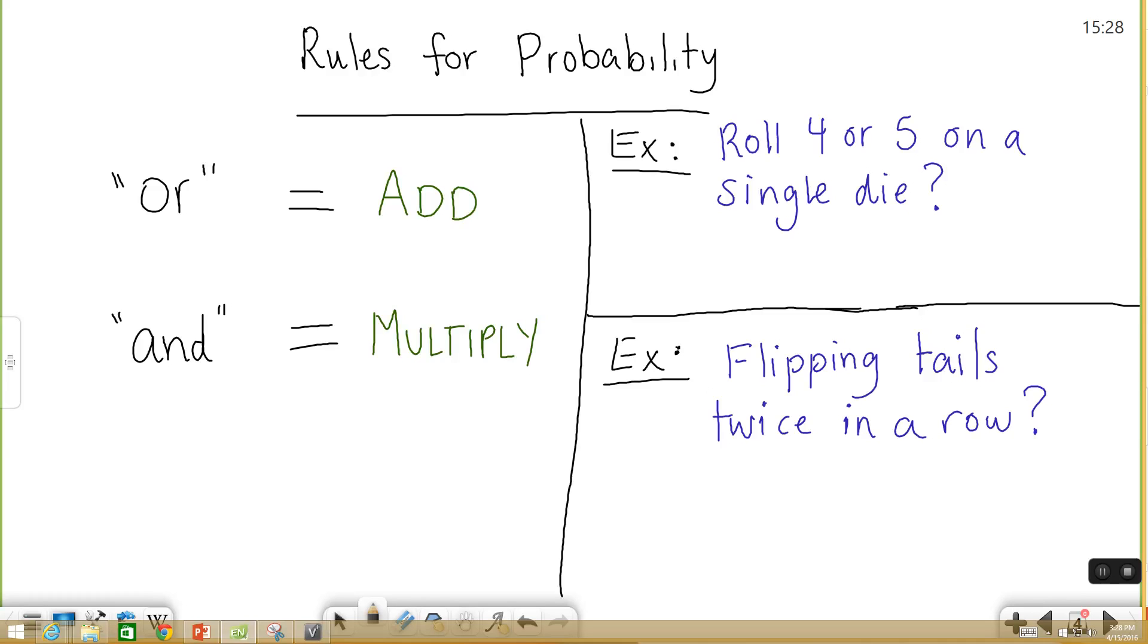So let's look at an example of each. Let's say you're rolling a single die, and you want a probability of rolling a four or a five. Well, the probability of rolling a four is one out of six, like we said before. The probability of rolling a five is also one out of six. Since we're talking about or, we're going to add, and whatever we get is our answer. It ends up being two over six, which typically you'll see reduced to be one third. But for now, I'm just going to leave it as two over six.